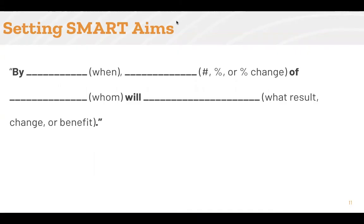One good format your organization can use when setting a SMART AIM is: by when, X number percent or percent change, of whom, will change, benefit, or result in something.